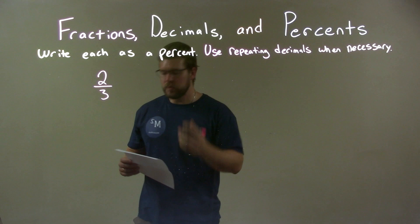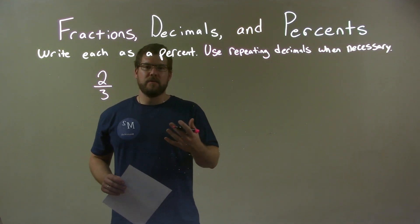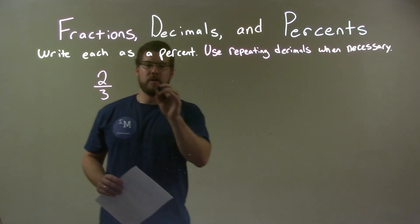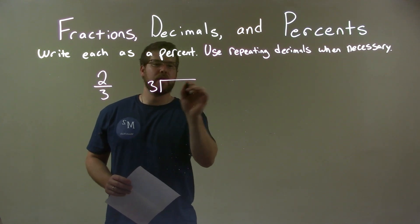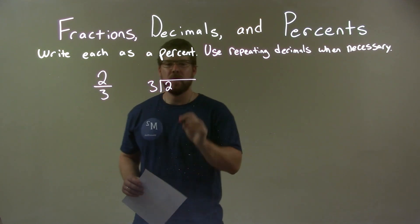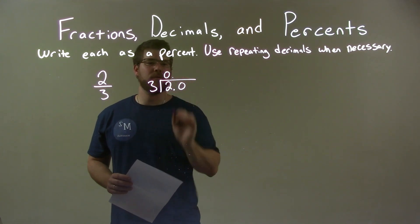The way I first go about this is I write that as a decimal. So I do long division: three goes into two, okay, and I have to do 2.0 because it can't go into two evenly.